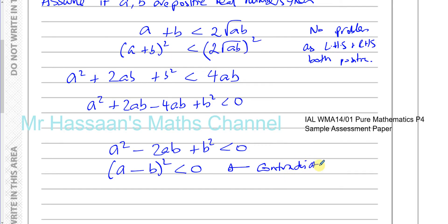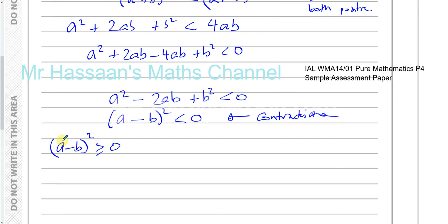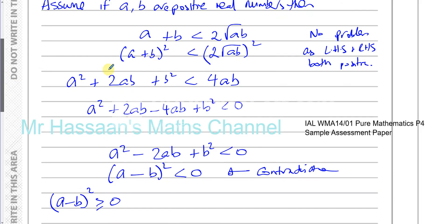This is a perfect square: A squared minus 2AB plus B squared equals (A minus B) squared, which is less than zero. This is a contradiction, because when you square anything — whether A minus B is positive or negative — it will always be greater than or equal to zero.